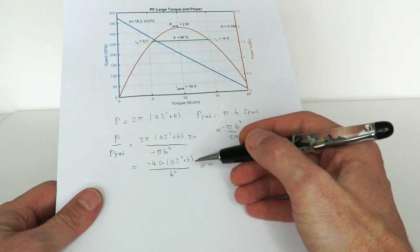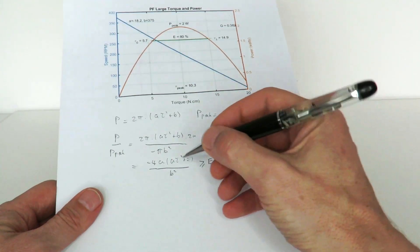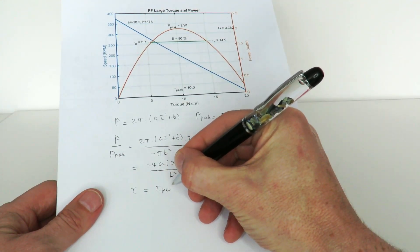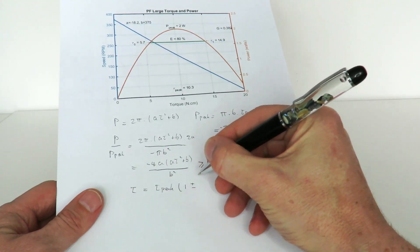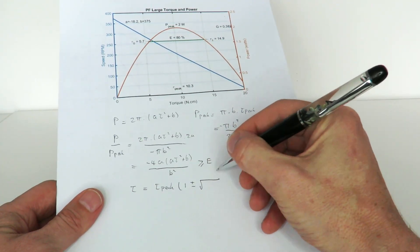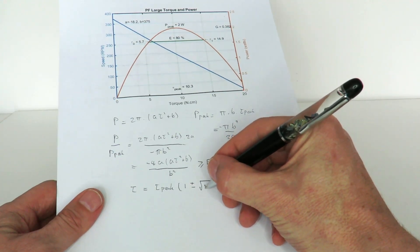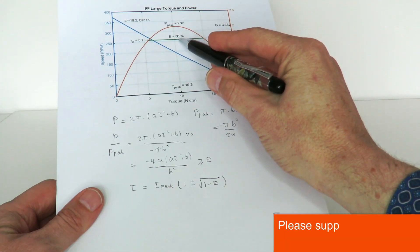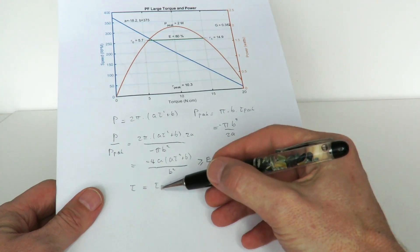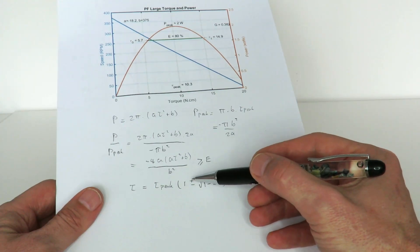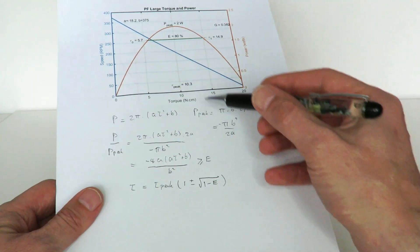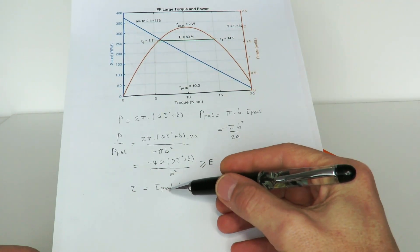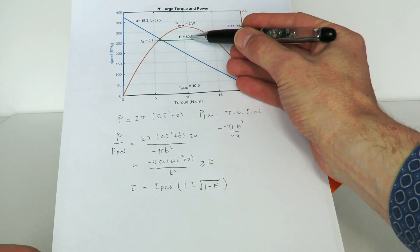Rather than going through all the algebra steps, here is the result: the two torque solutions are tor = tor_peak × (1 ± √(1 - e)). This gives us the two operating points needed to keep within an efficiency e — for example 80 percent or higher. Substituting the numbers, we find torque_0 is about 5.7 newton-centimeters and torque_1 is about 14.9.